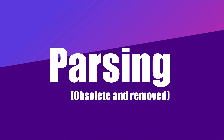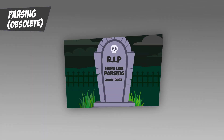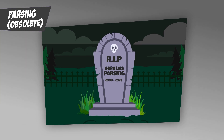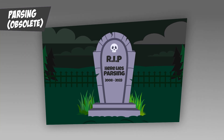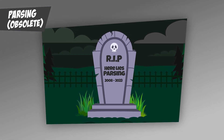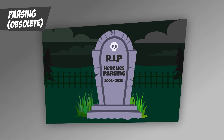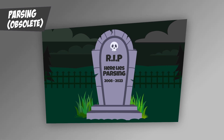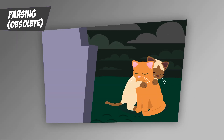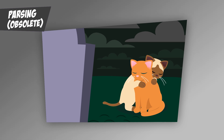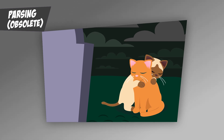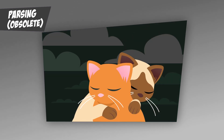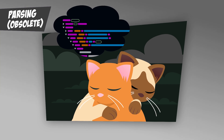Parsing — obsolete and removed. Let's bid a fond farewell to parsing, one of the original WCAG criteria that's now officially retired. Parsing was designed to ensure that code was error-free enough for user agents, like browsers and assistive technologies, to process it without breaking. Essentially, it was all about clean, consistent HTML.